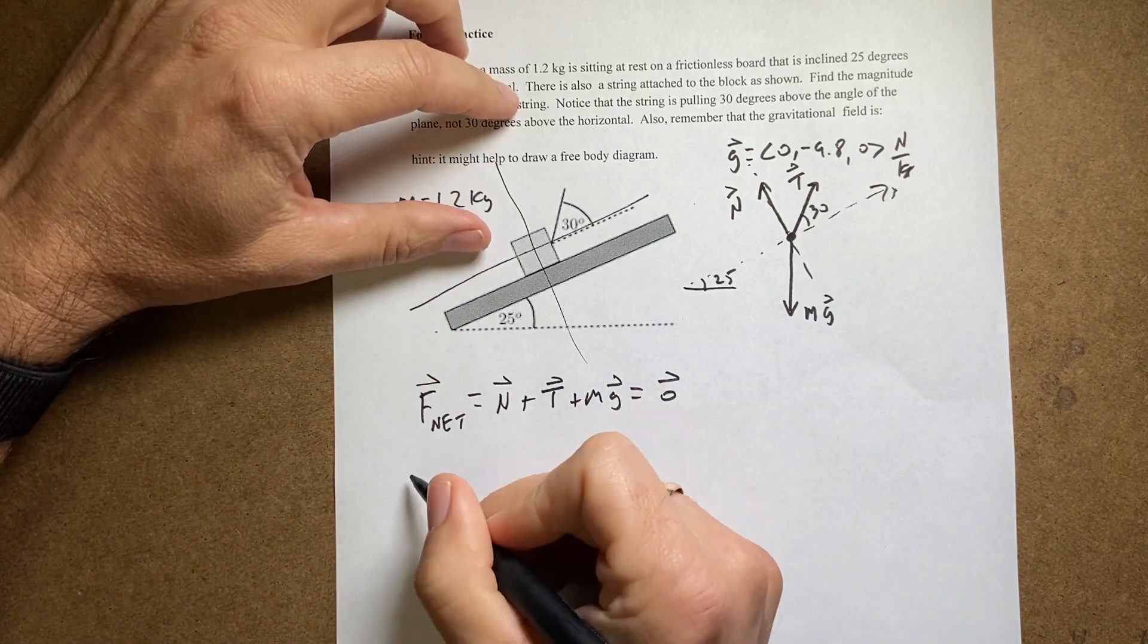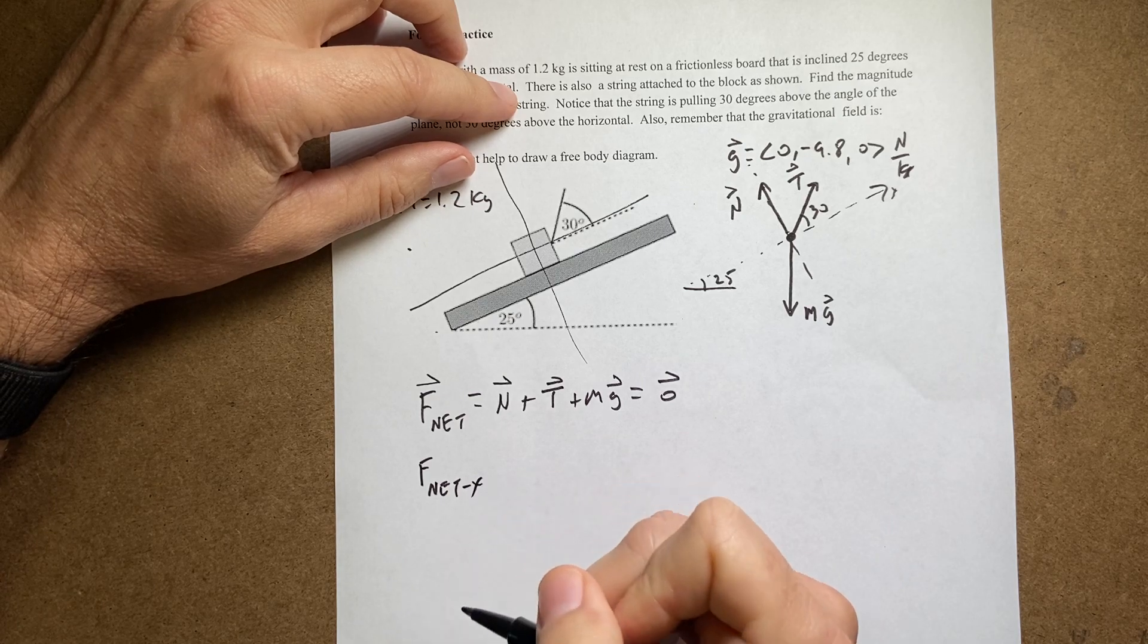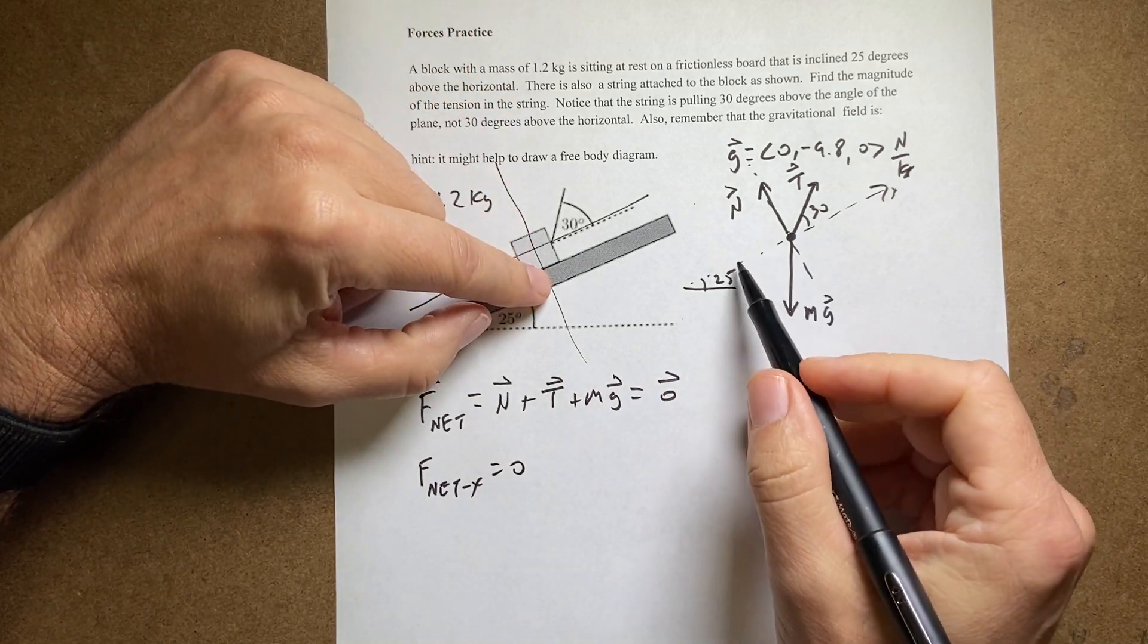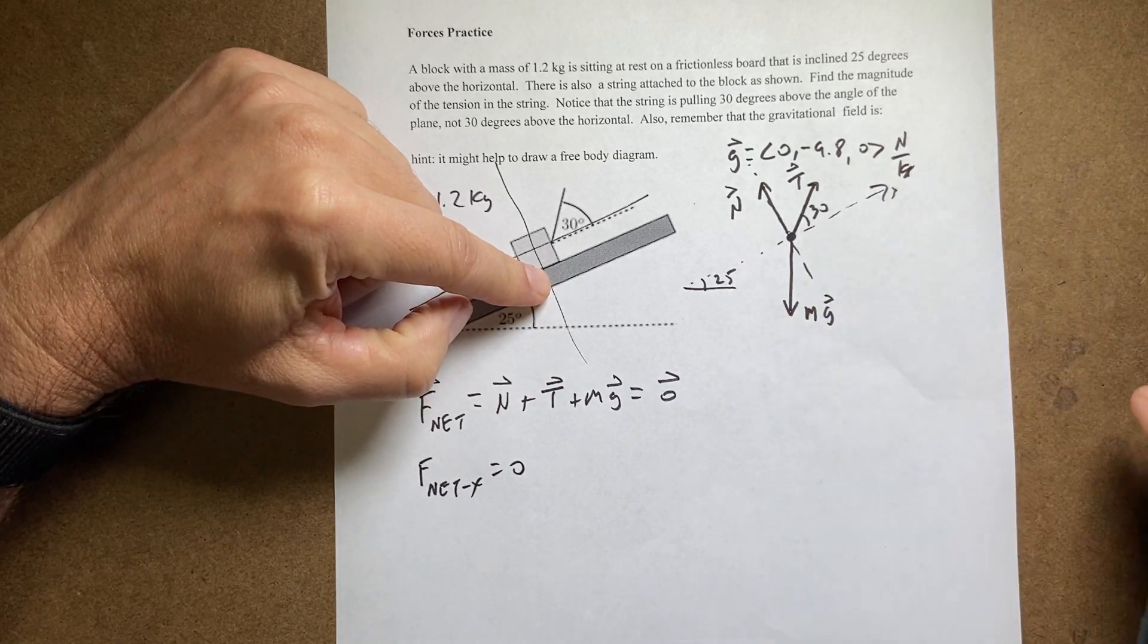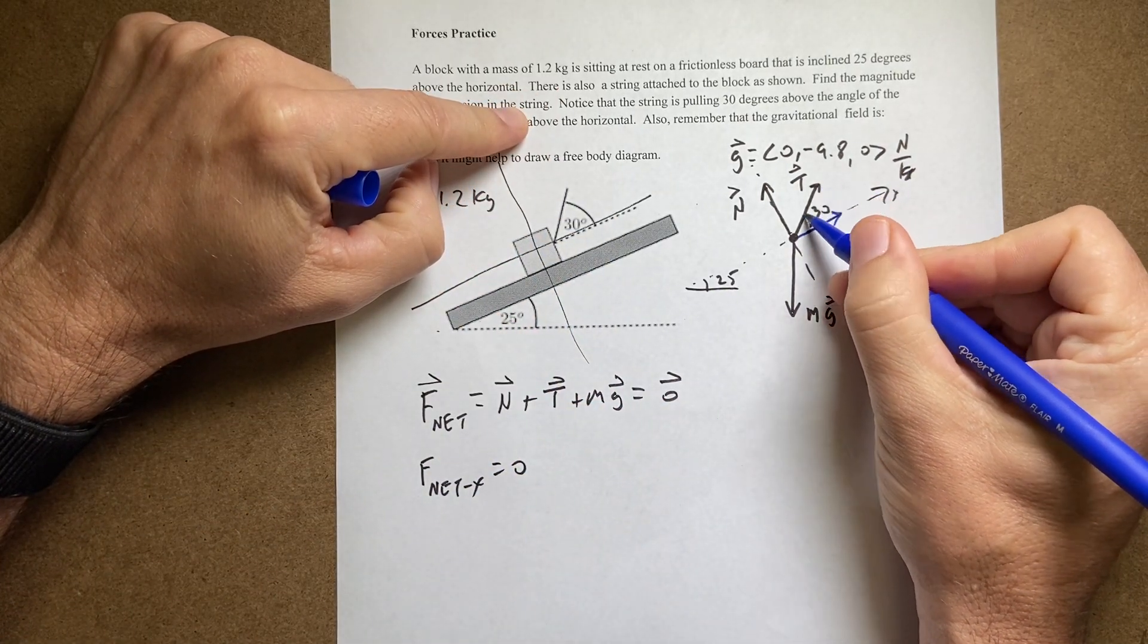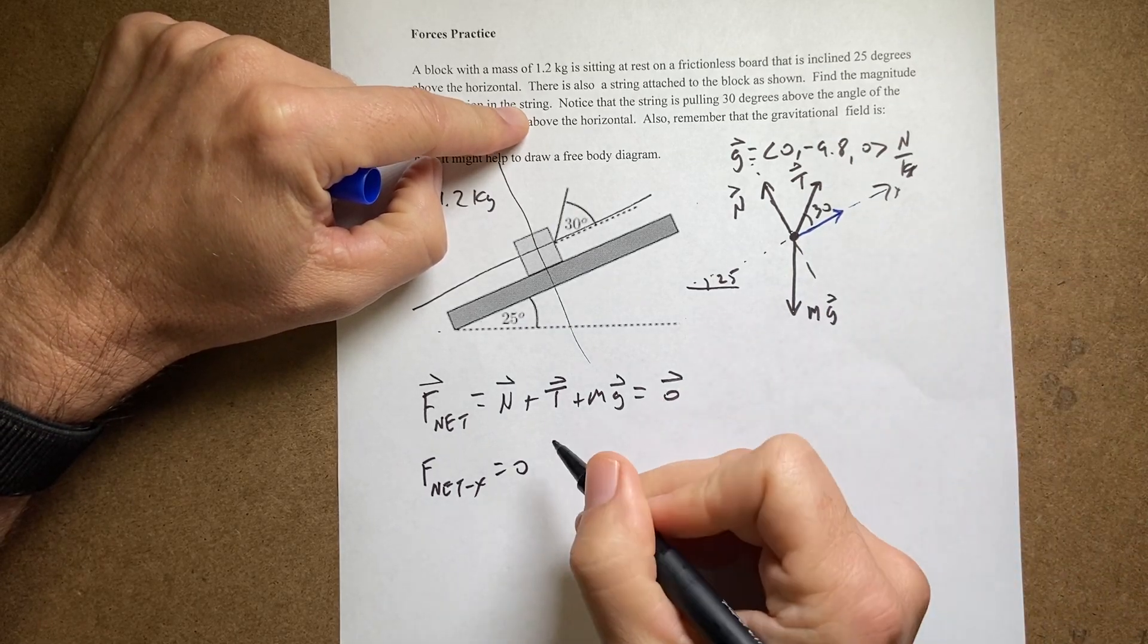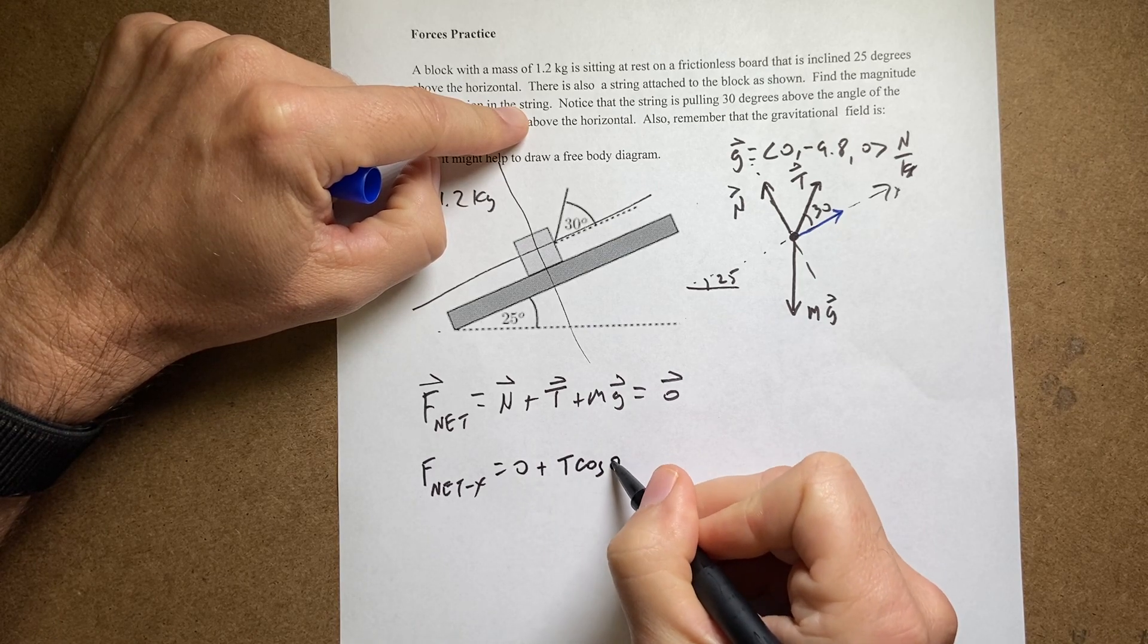Of course it's easier to write this in two scalar equations. F net x equals 0. And let's go ahead and write that out. So what forces are in the x direction? Well this one has no x component. This one has a component in the x direction right here. And you'll notice if that's t this is t cosine theta. So I'm going to, it's in the positive x direction. So I'm going to say plus t cosine theta.